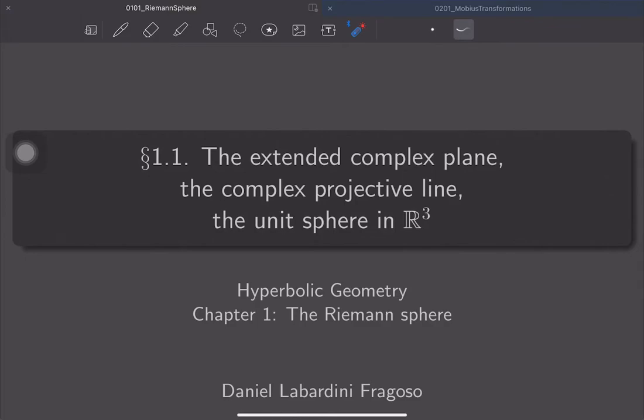So those are its points, and we give it also some topology. And the third model is the one perhaps easiest to visualize, which is just the unit sphere in R³. So all the points in R³ whose distance to the origin is one.